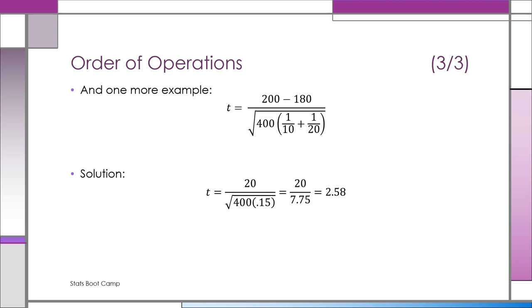That gets done first. You get 0.15 multiplied by 400. Put that under a square root. Then you can finally take 20 divided by 7.75, and your solution is that T computes to 2.58.